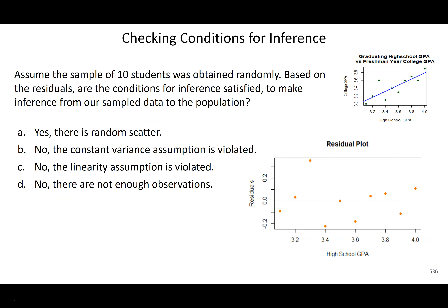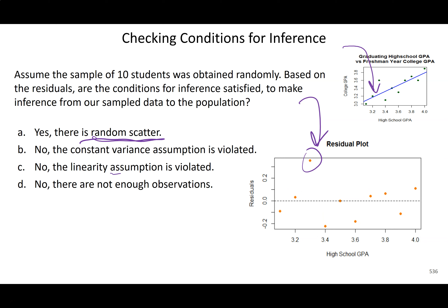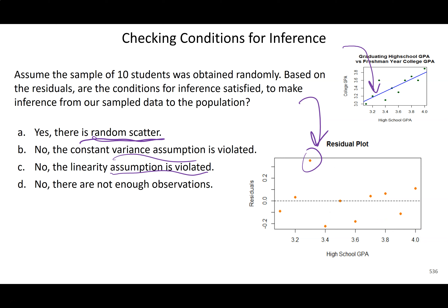Checking the high school GPA example: looking at the residual plot, there is an outlier but it's not extreme. The spread looks fairly constant throughout, and I see random scatter — no clear curve, no fanning in or fanning out. Roughly half the residuals are above zero and roughly half are below, with no distinct pattern. It would be more useful with more observations, but I feel okay moving forward.